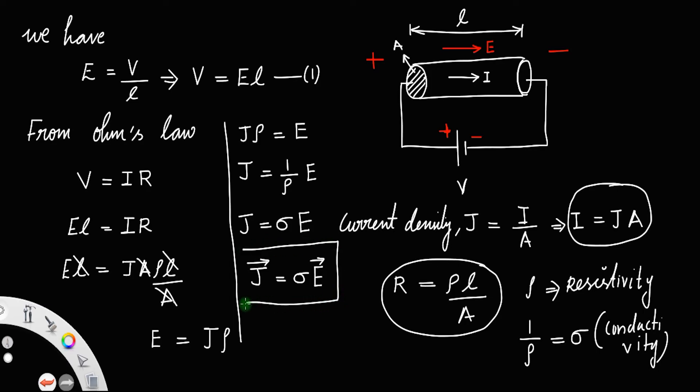This is the vector form of Ohm's law. The other one, V equals IR, is the scalar form of Ohm's law.